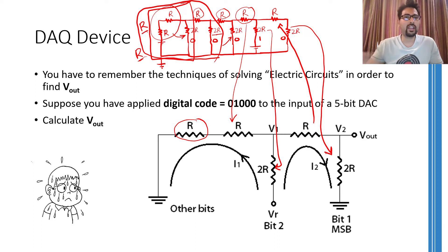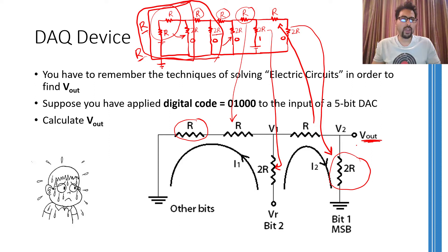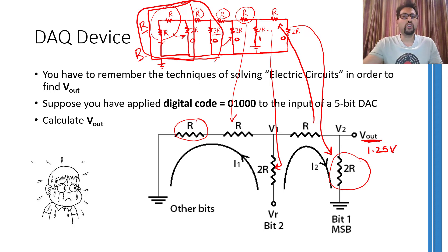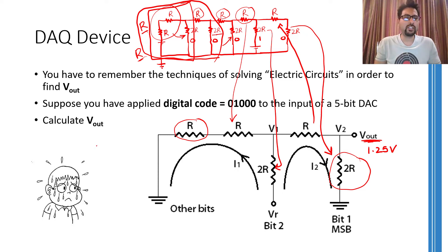Now our job is to solve this circuit for the voltage across the output terminal Vout. You can apply Kirchhoff's voltage law or Kirchhoff's current law to figure out the output voltage. If you have calculated things correctly, you will arrive at 1.25 volts when using a reference voltage of 5 volts. With 5 bits and a 5-volt reference, the 5 volts are divided into 32 equal levels. Each level represents 0.15625 volts.